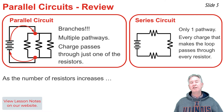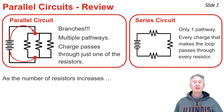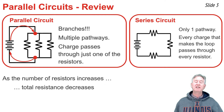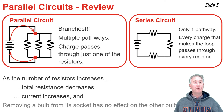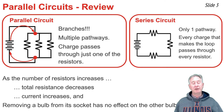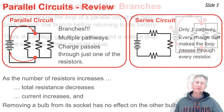Parallel circuits have this unique feature that as you increase the number of resistors within the circuit, you actually decrease the overall resistance, which causes an increase in the amount of current. Another unique feature is that if you were to unscrew a bulb from one of its sockets, the other bulbs will still light because they're present within their own branch, independent of the branch where the bulb was removed.